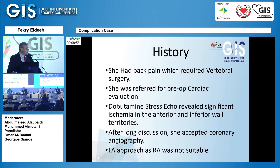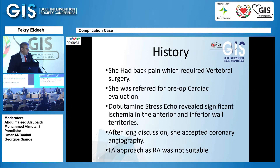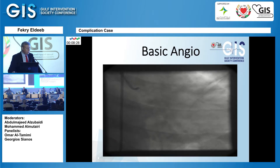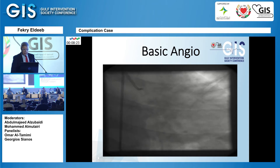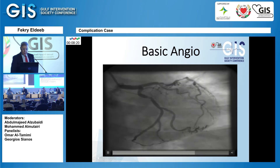She had back pain and was referred to me by my colleague in orthopedics for pre-op evaluation for back surgery. I did a dobutamine stress echo for her, which was obviously positive for ischemia in the anterior and inferior wall territories. The patient was very hesitant, as she had been trying to avoid this for a long time, but under the pressure of back pain and the need for surgery, she agreed to do the angiography.